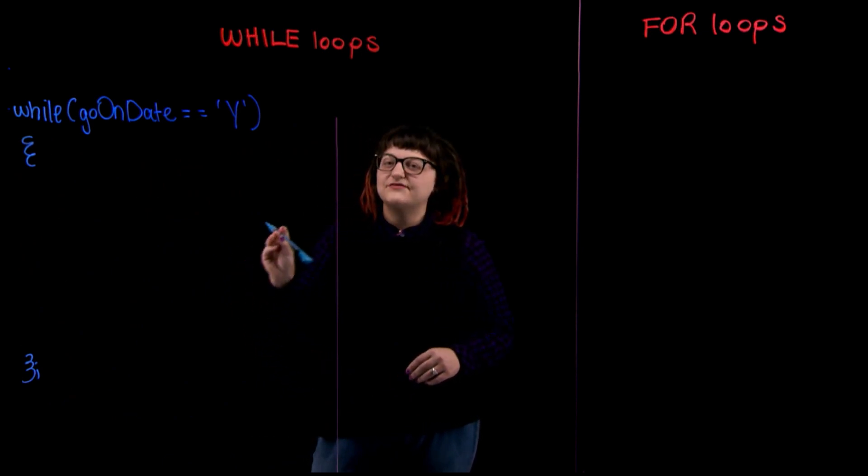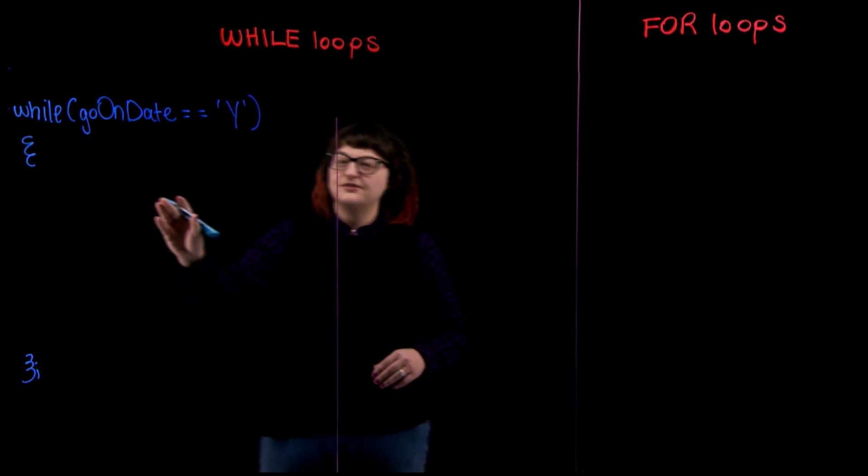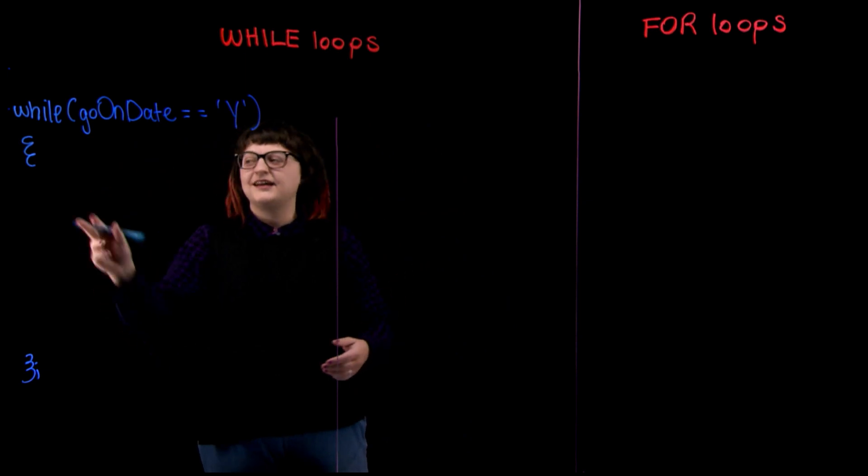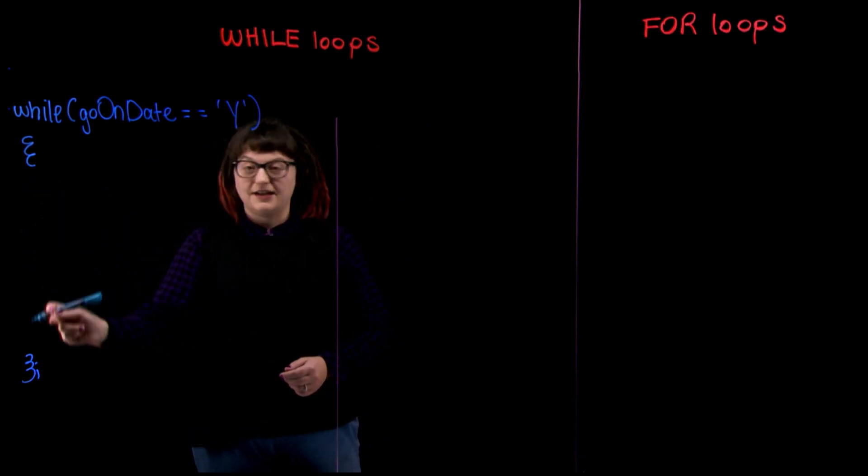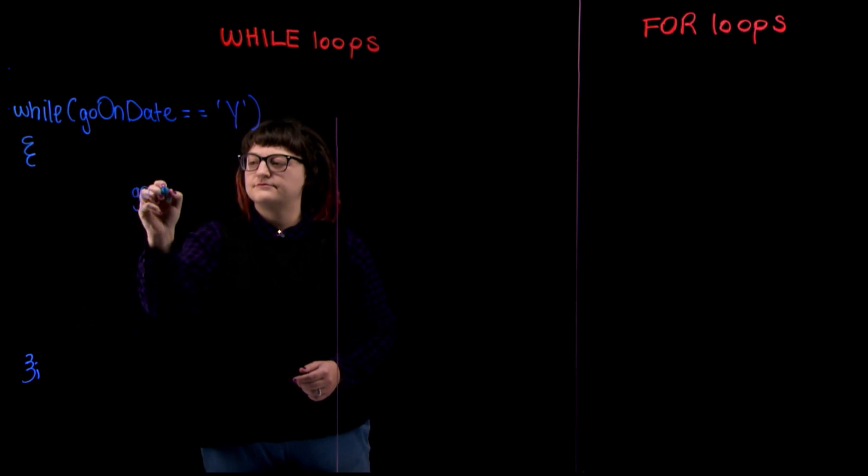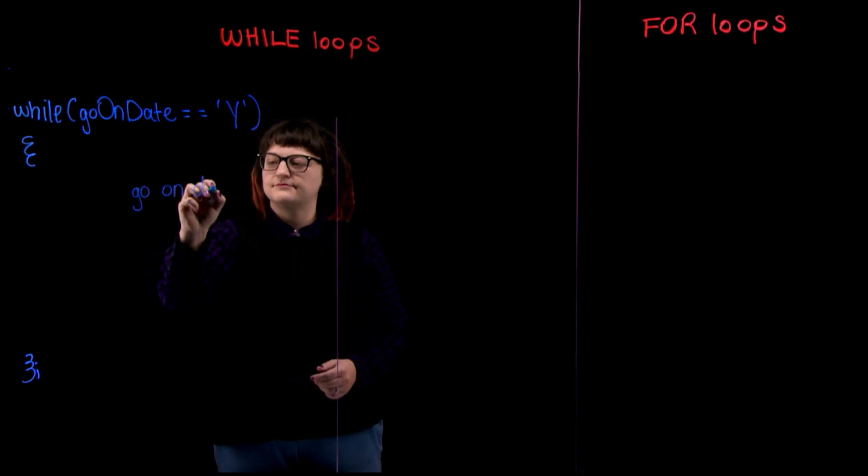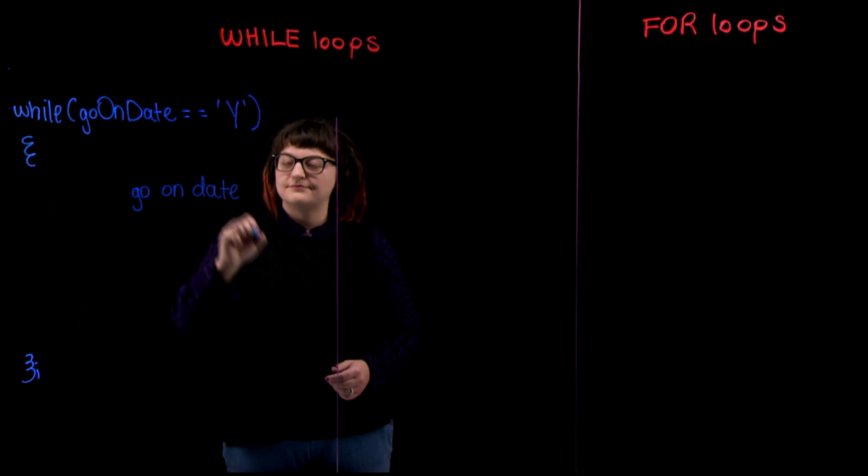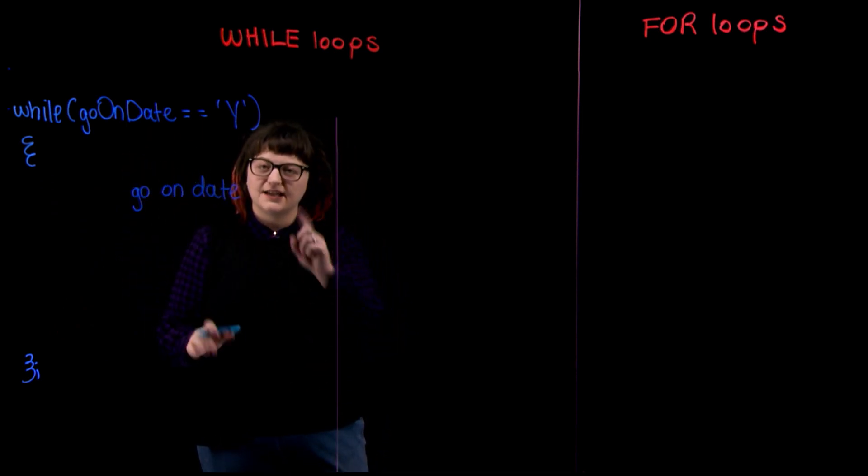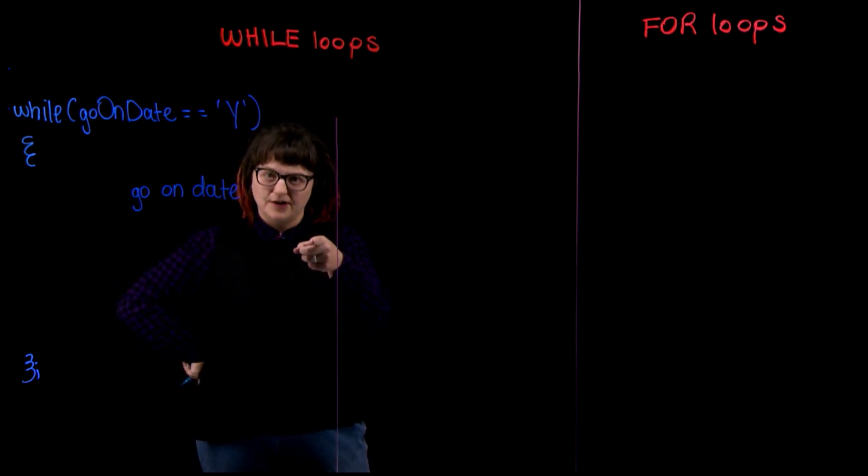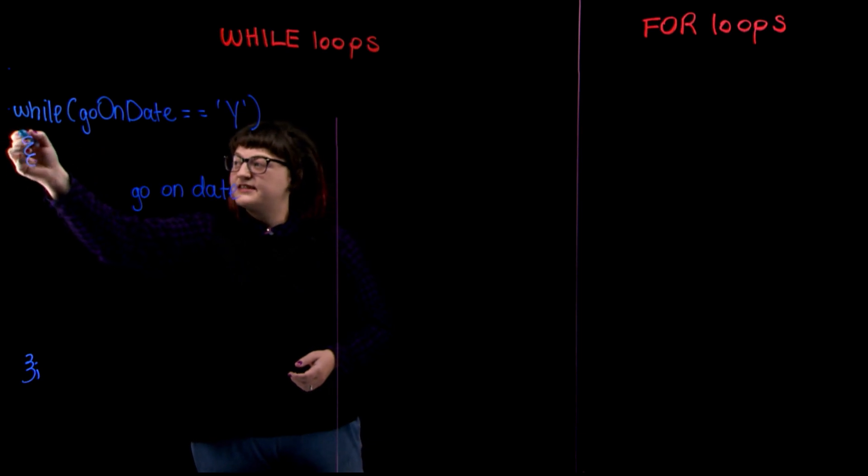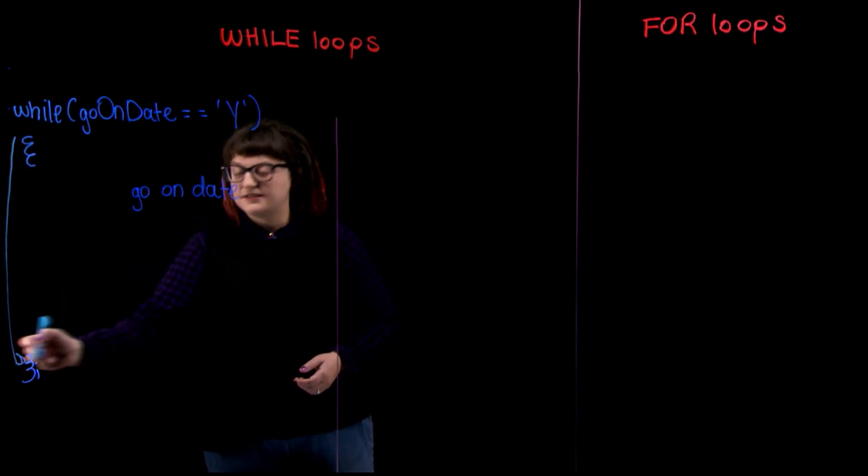If the condition is evaluated to be true, so in this case, going on the date equals y. Yes, we want to go on the date. Then we take the next step and we enter our loop. If this condition had been false, for whatever reason, and guys, you don't have to explain anything to anyone, then there's no reason to continue. In that case, this would have just kicked us down to the bottom of the loop.